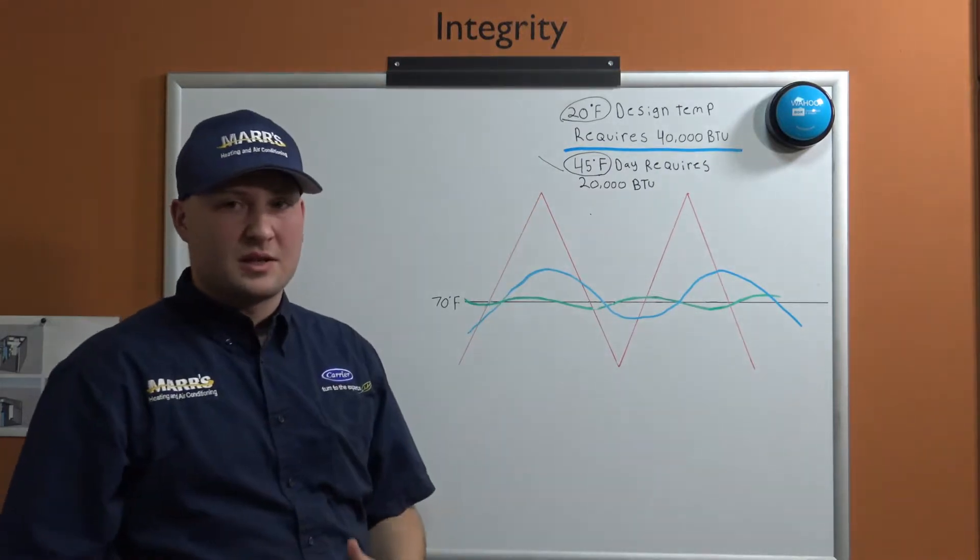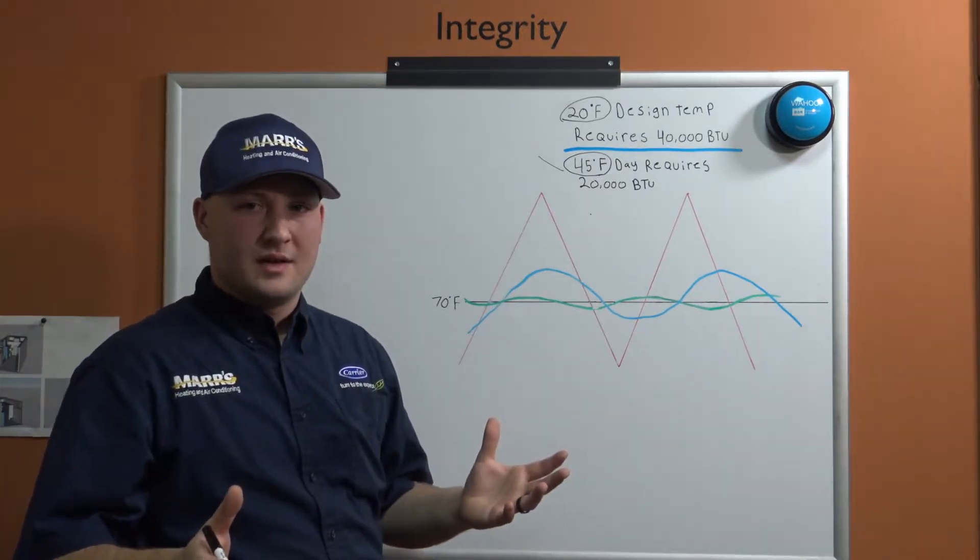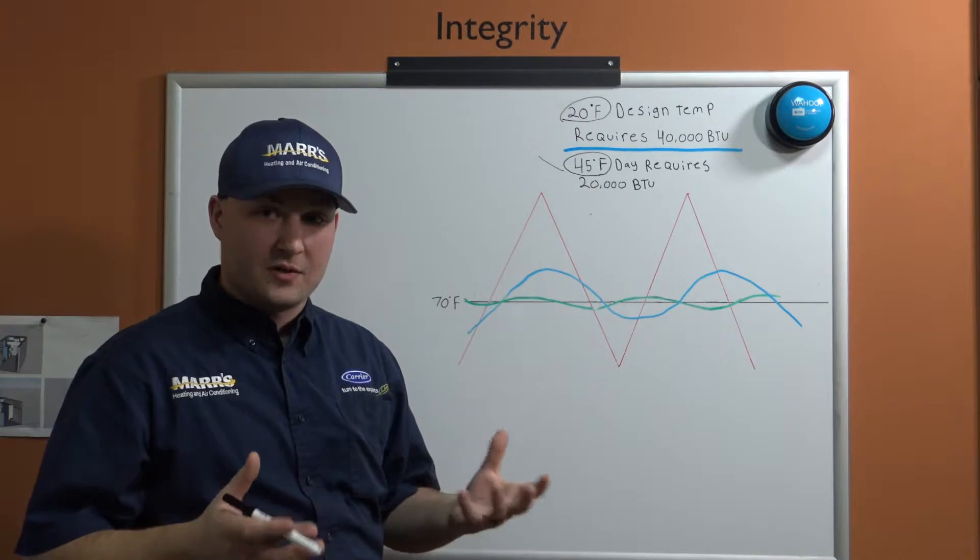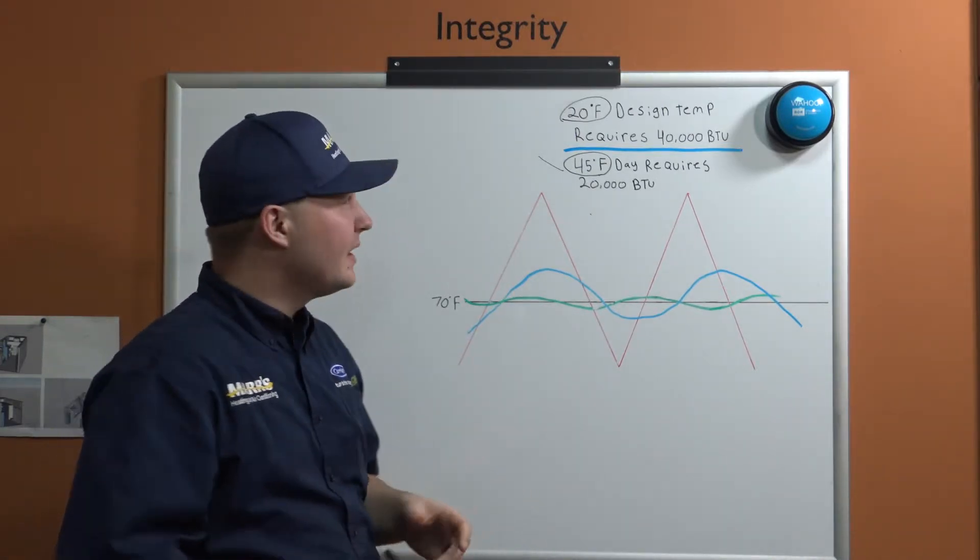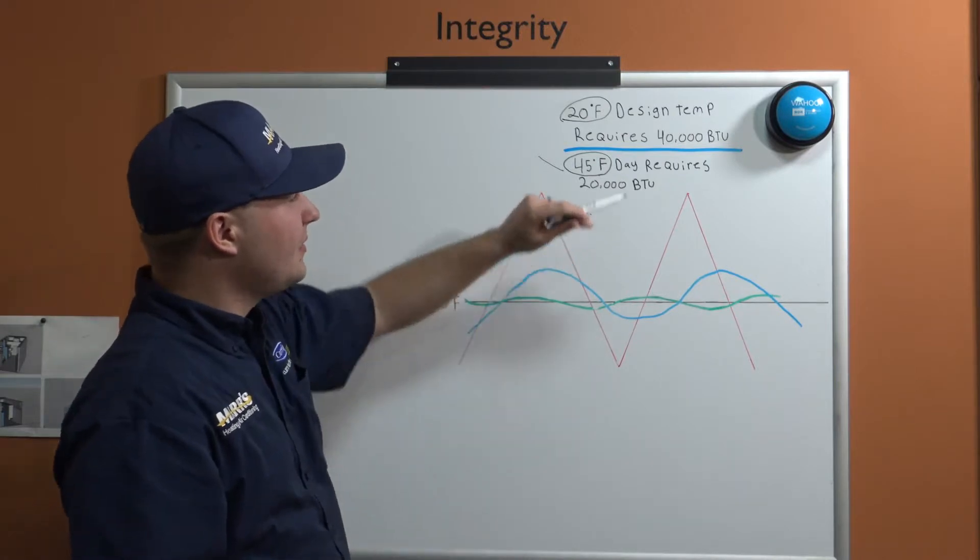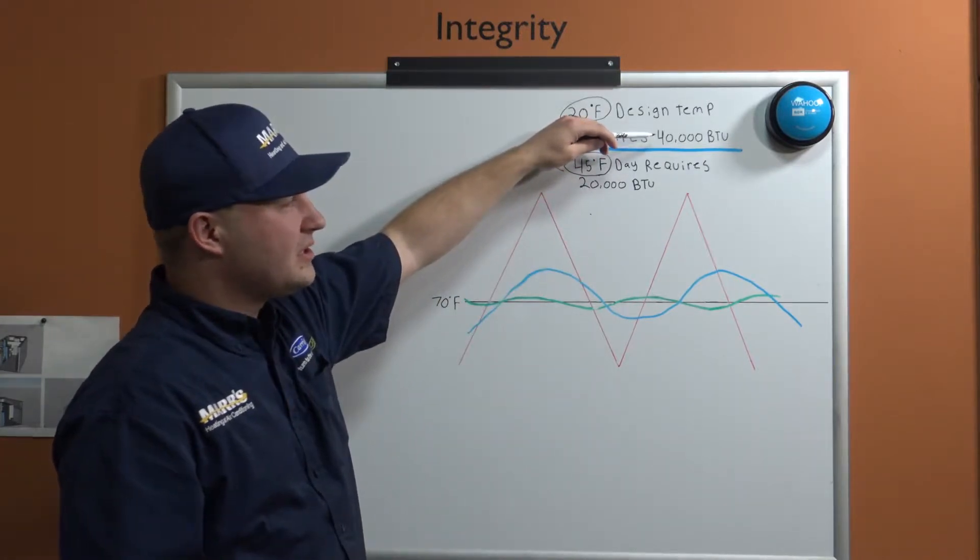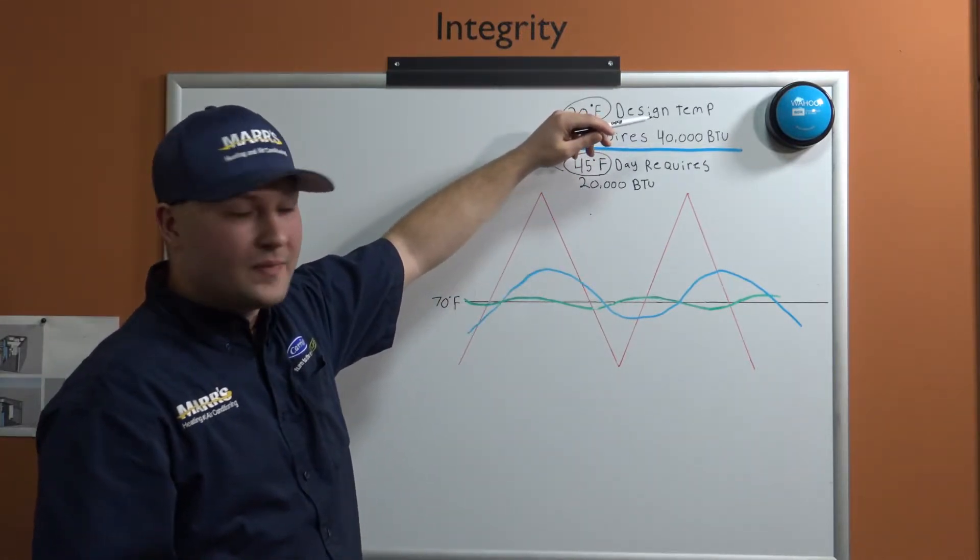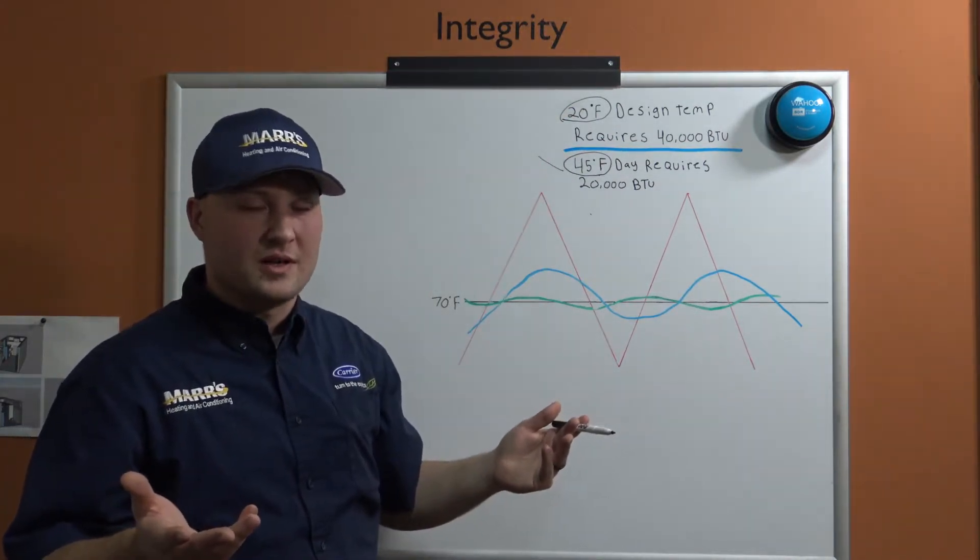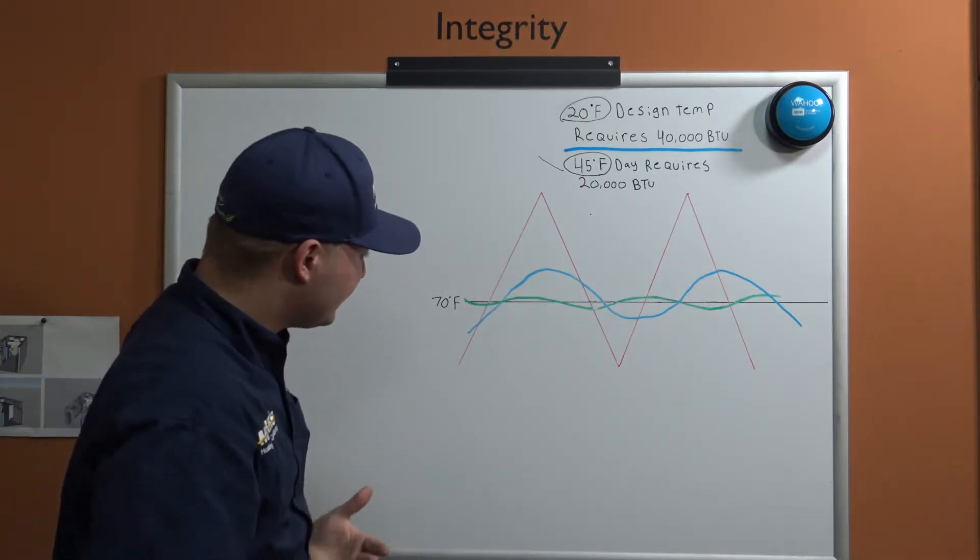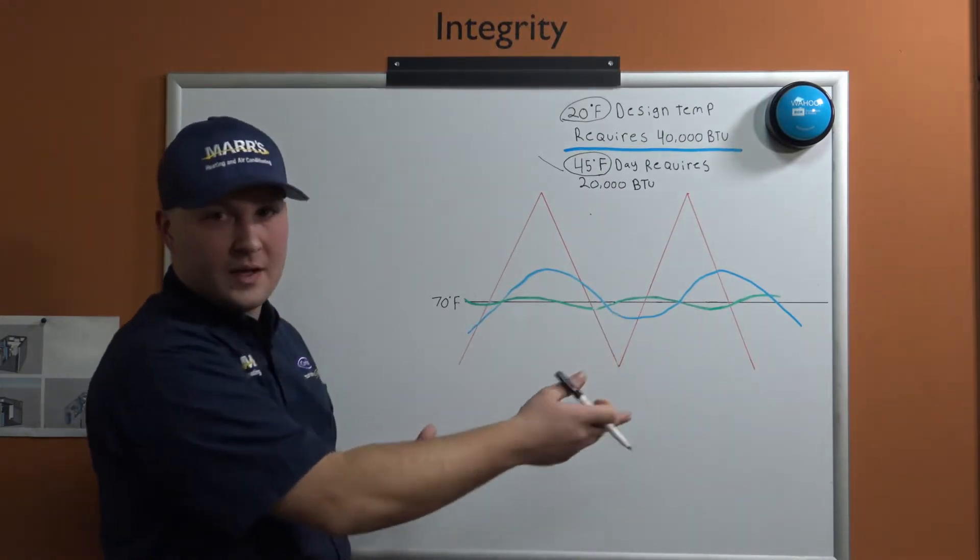So the majority of the time our equipment is actually way oversized, and that's the reality with single-speed equipment. We're either 100% on or 100% off. For this home maybe we have a 40,000 BTU capable system, but really we only need 20,000 for the majority of the time the system's running.